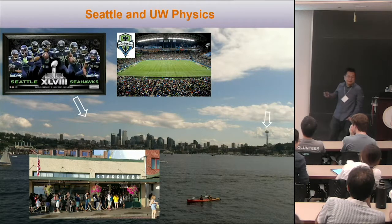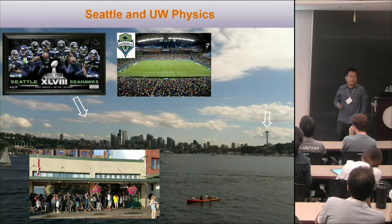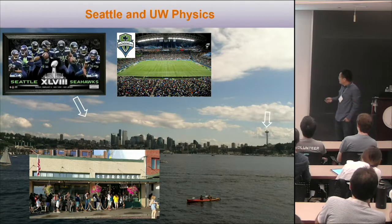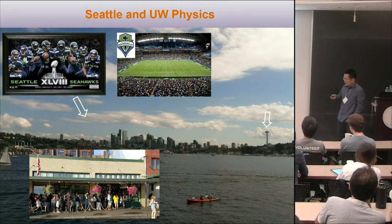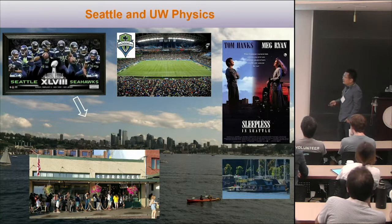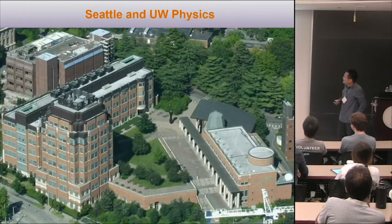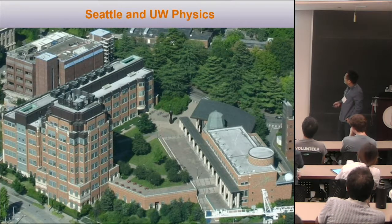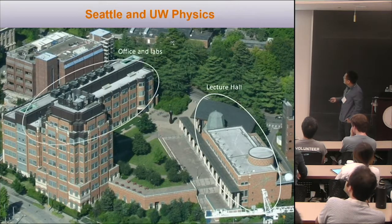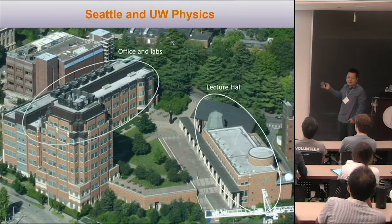Seattle is always famous for coffee. This is actually the first Starbucks in the whole world, in downtown. Here's the campus — we have lecture halls, offices, labs, and this peanut-shaped building. Nobody knows what it is, but I call it the peanut.